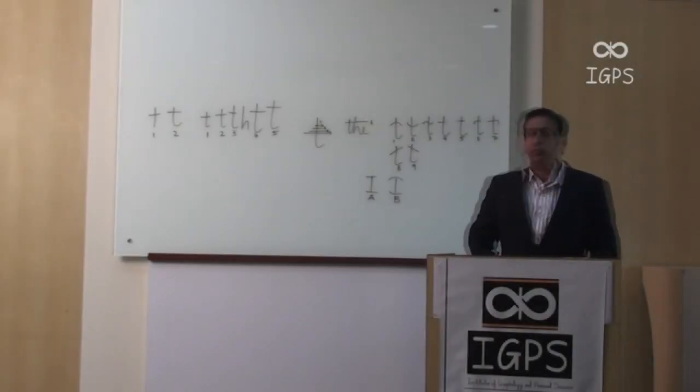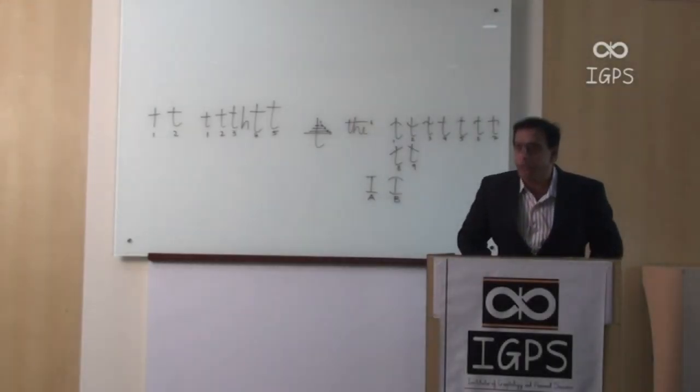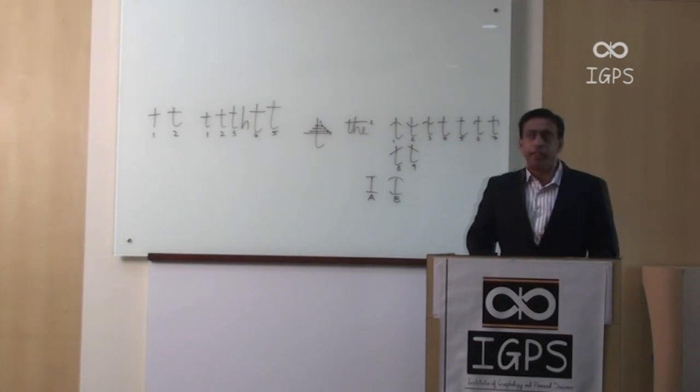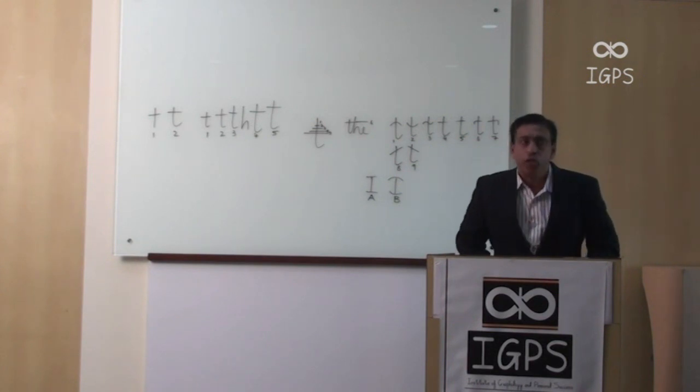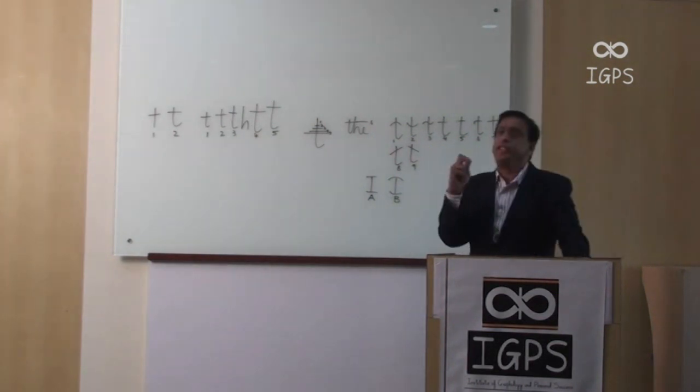Now we come to the crossbar, the most important aspect in your handwriting. The letter T has got a stem that represents your health and the crossbar represents your willpower, endurance. What is the crossbar?